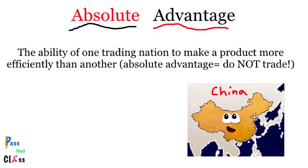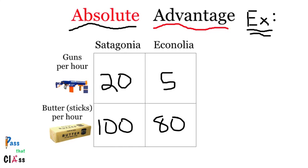So now let's take a closer look into absolute advantage. Here we have a little model with two made-up countries and the famous trade-off: guns versus butter. Satagonia can make 20 guns per hour while Econalia can only make 5 guns per hour. Satagonia can make 100 sticks of butter per hour, but Econalia can only make 80. So according to absolute advantage, Satagonia should not trade with Econalia at all, because Satagonia is more efficient at making both guns and butter.